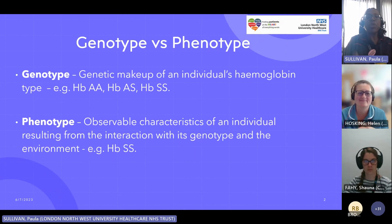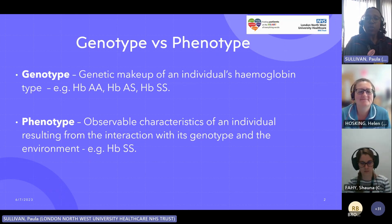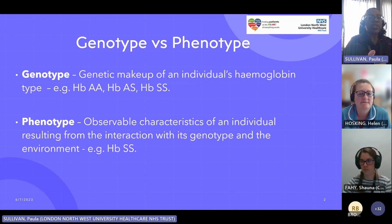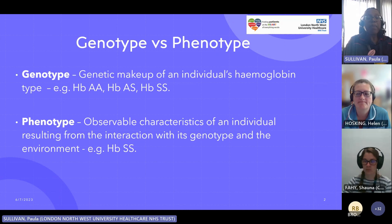HBSS means that they are affected with sickle cell anaemia. The phenotype, on the other hand, is the observable characteristics of an individual resulting from the interaction with its genotype and the environment. For example, we could have siblings both presenting with HBSS — one needing significant treatment, always in hospital having crises, needing blood transfusions and fluids, while his sibling has slightly different problems and doesn't need so many transfusions. They're from the same mum and dad, but their phenotype is different.